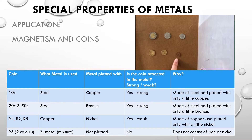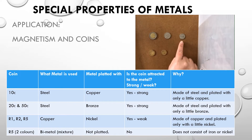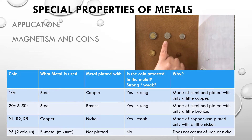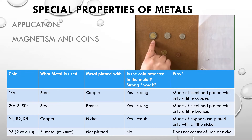The 1 rand and 2 rand coins, and the old 5 rand, are copper plated with nickel. Copper is not one of our four magnetic metals, but nickel is. The new 5 rand coin is a bimetal — a mixture of metals — and it is not plated, so we'll see what happens to that one.